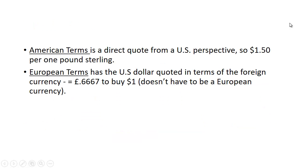The problem with this terminology is that $1.50 per pound is a direct quote from the U.S. perspective, but it's an indirect quote from the British perspective — because if you happen to be British, your domestic currency is the pound and the foreign currency is the dollar. Perhaps better terminology is American terms and European terms. American terms is a direct quote from a U.S. perspective: $1.50 per pound sterling. European terms has the dollar quoted in terms of the foreign currency: 0.667 pounds to buy one dollar. Keep in mind, it doesn't have to be a European currency — it could be Japanese yen, Mexican pesos, etc.